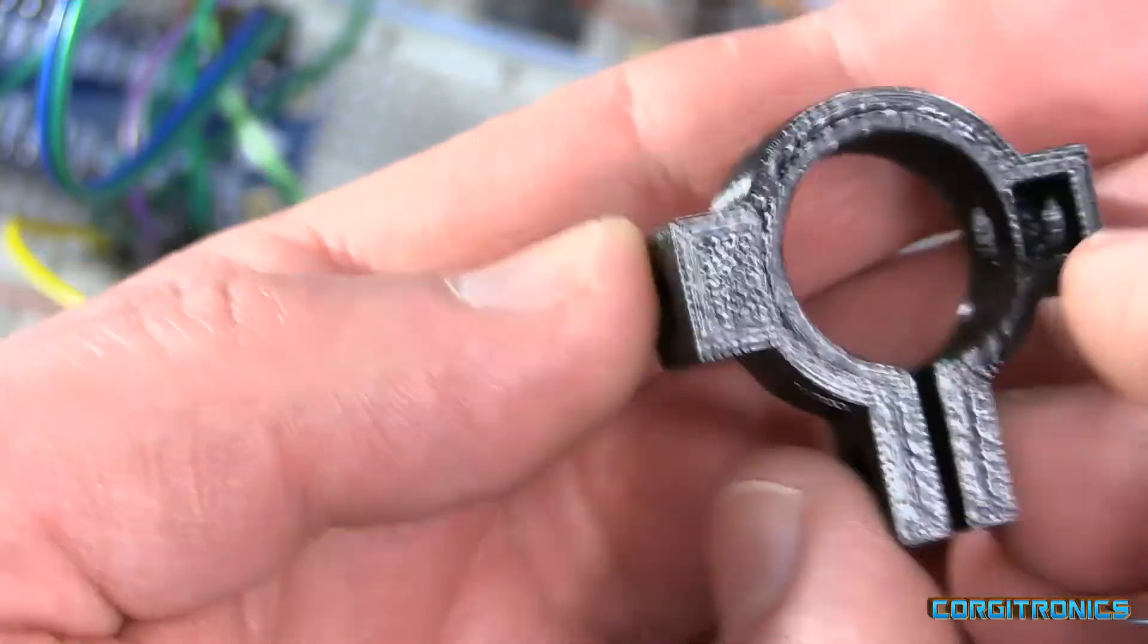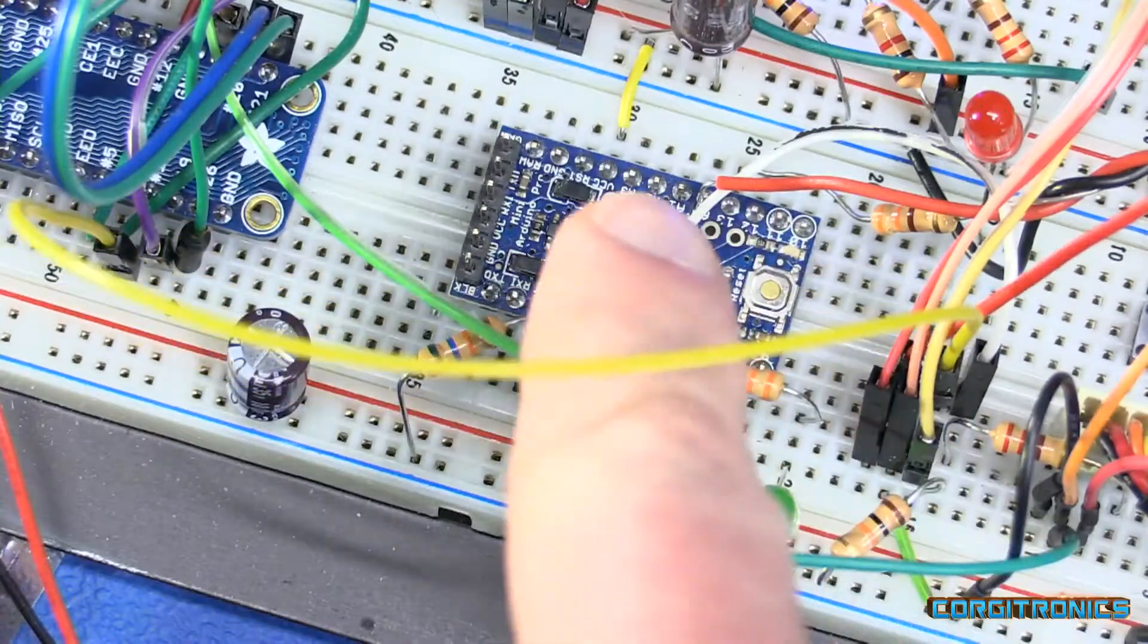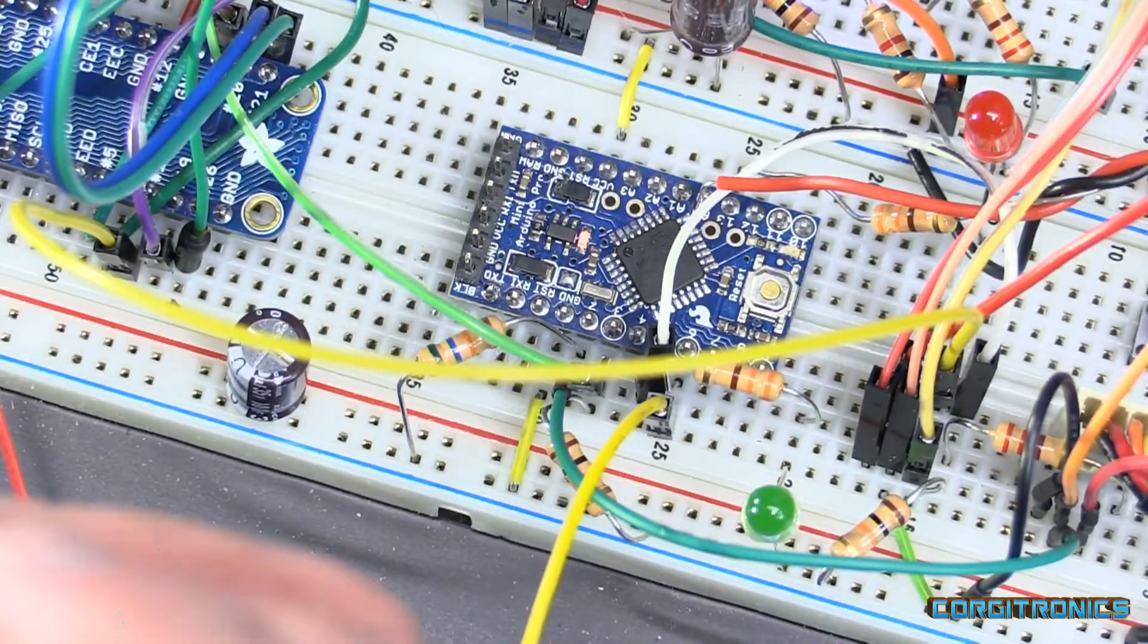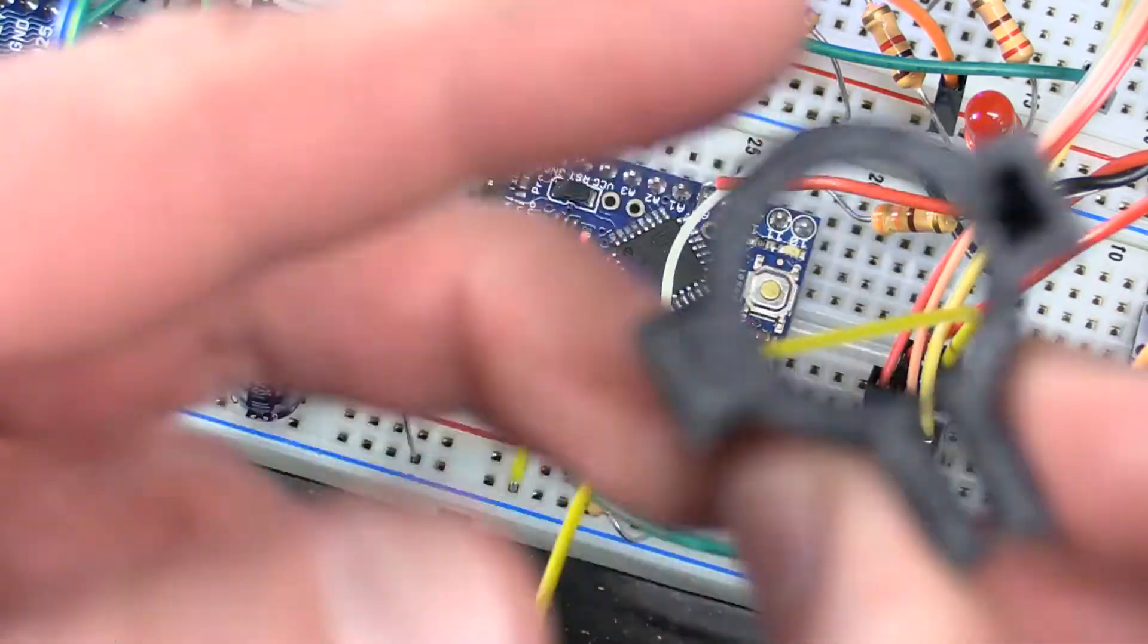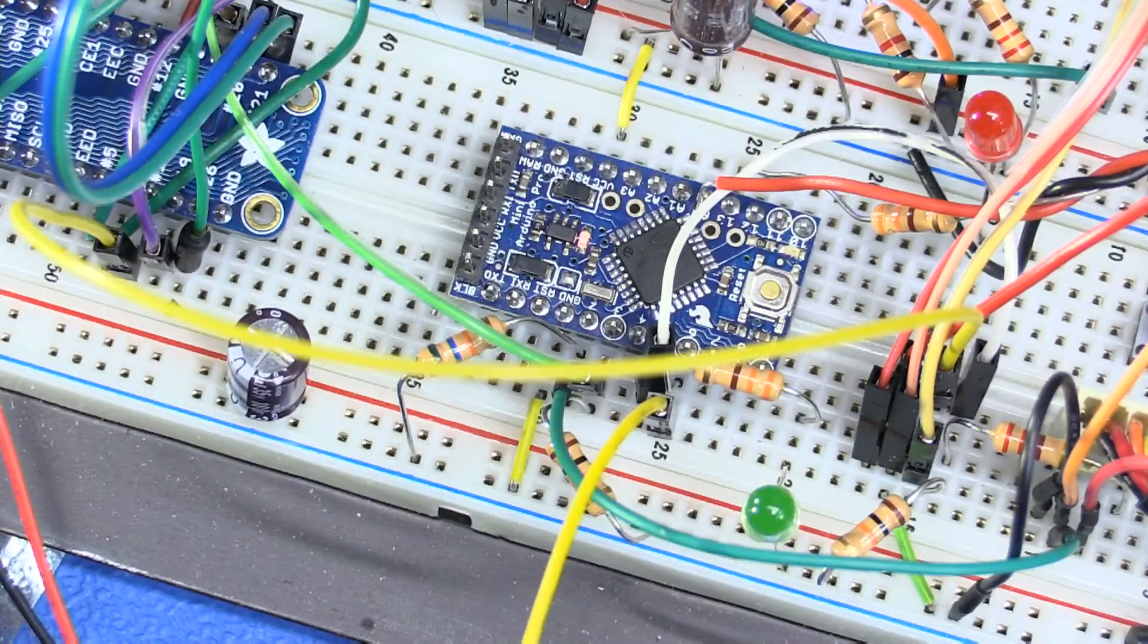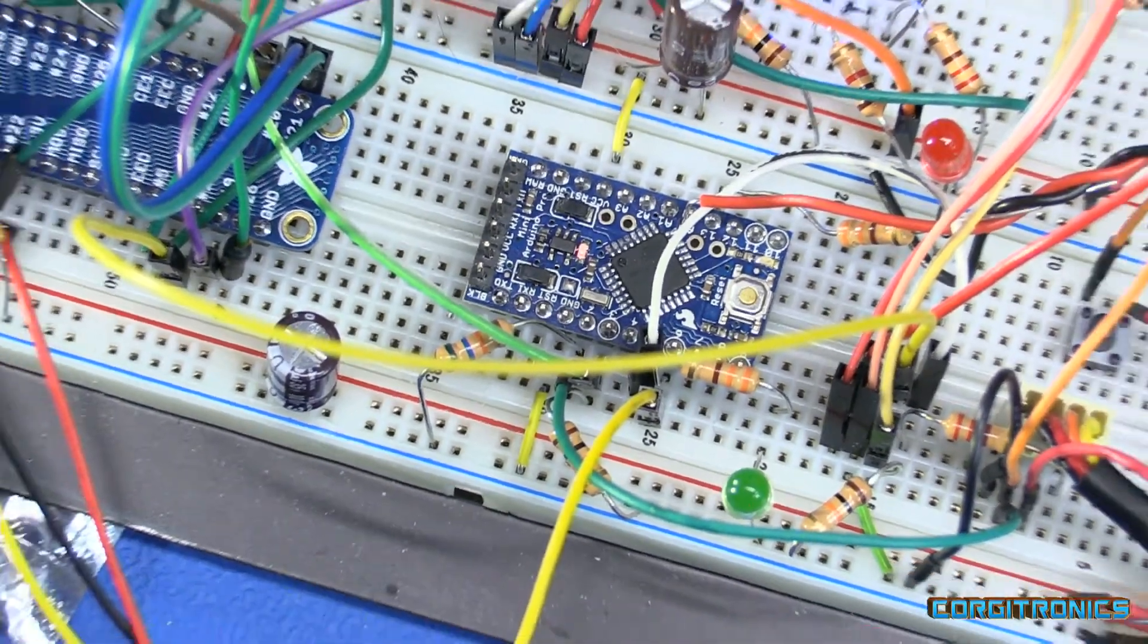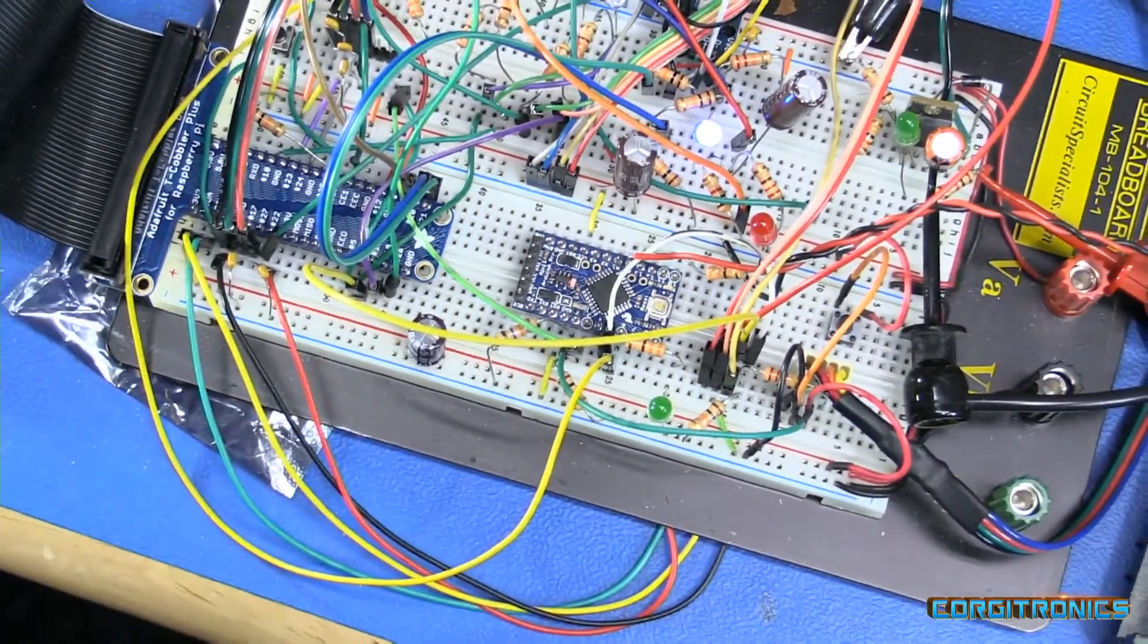That fits over the case feed tube and allows the system to know when a case has dropped through. So then the Arduino can turn on the motor for the case feeder until the case arrives, then it will turn off the case feeder and tell the Raspberry Pi that there is a case available.